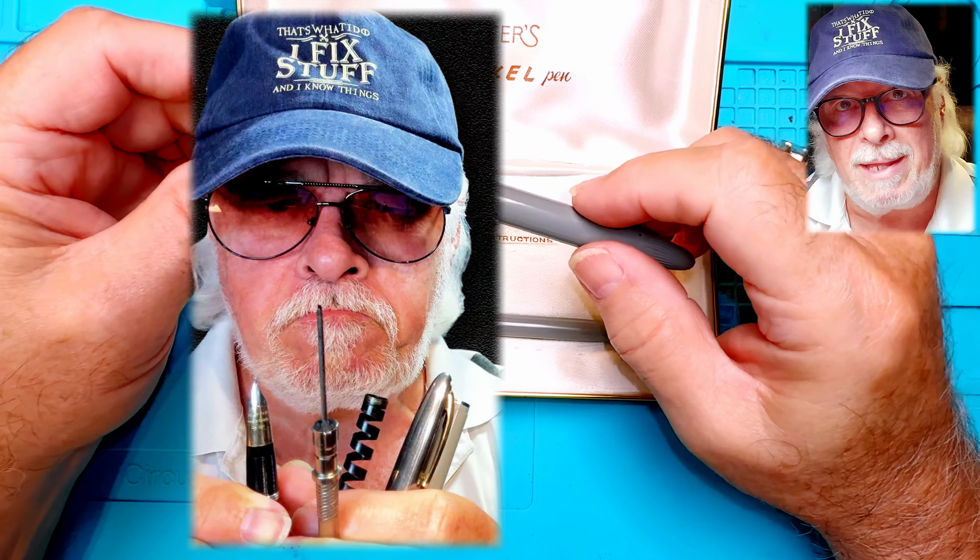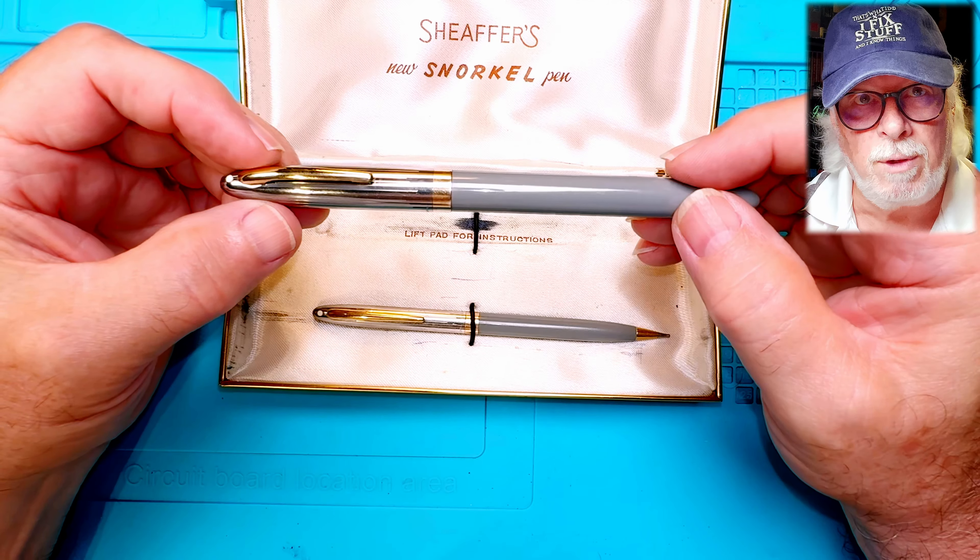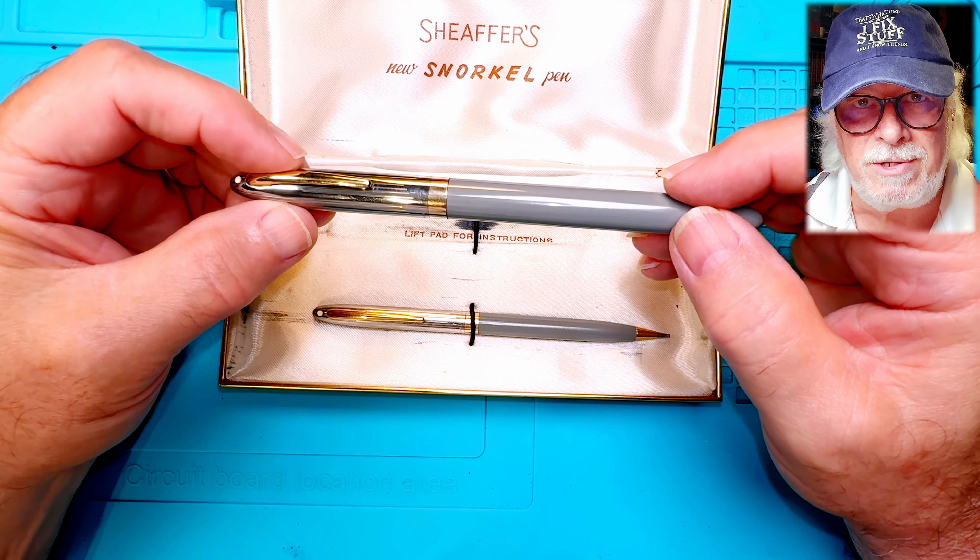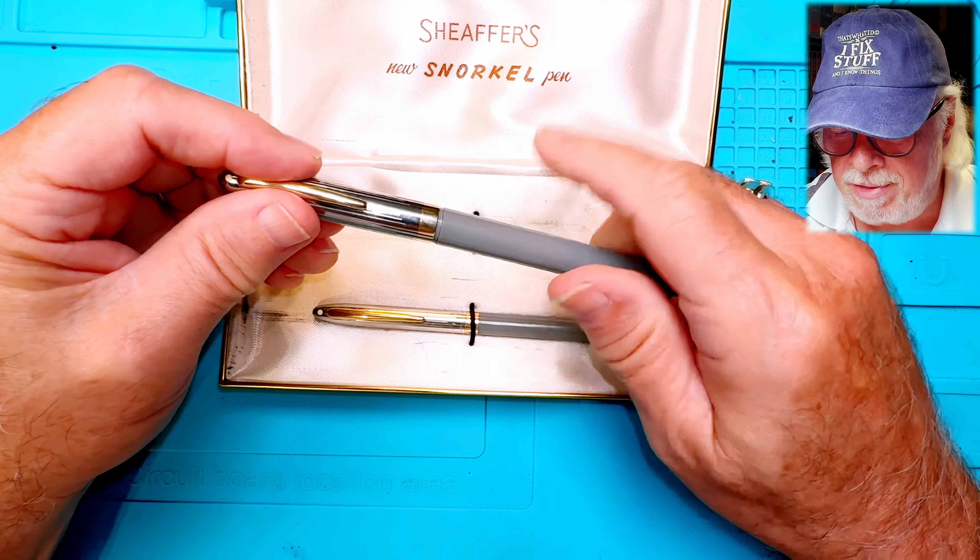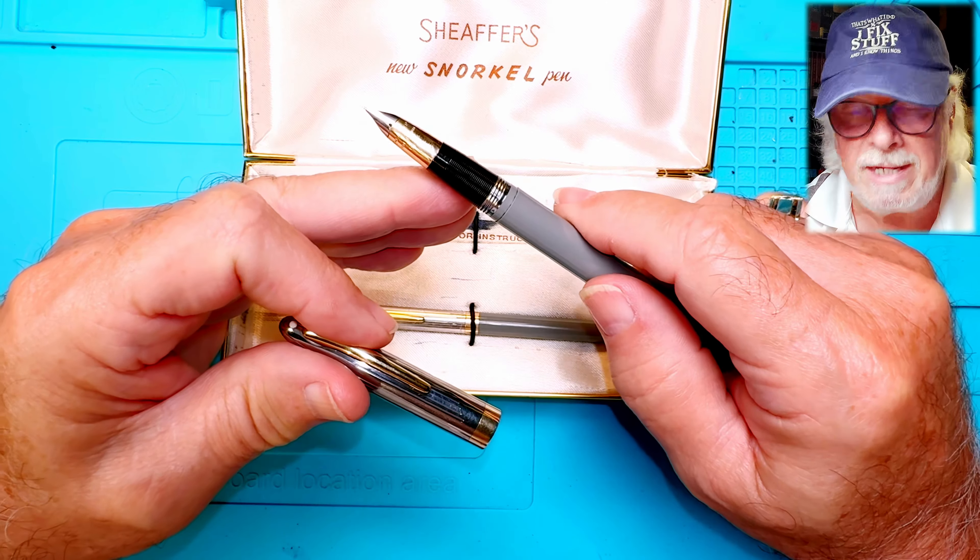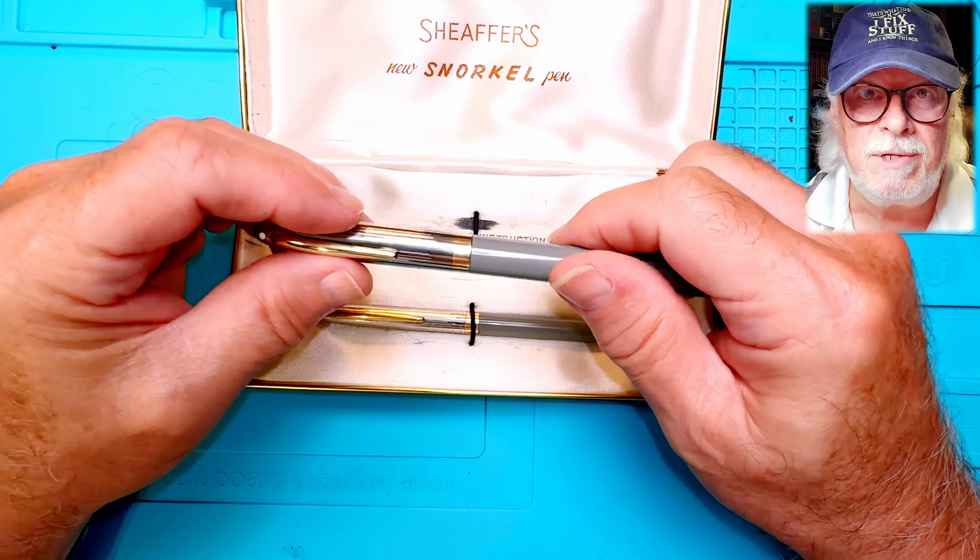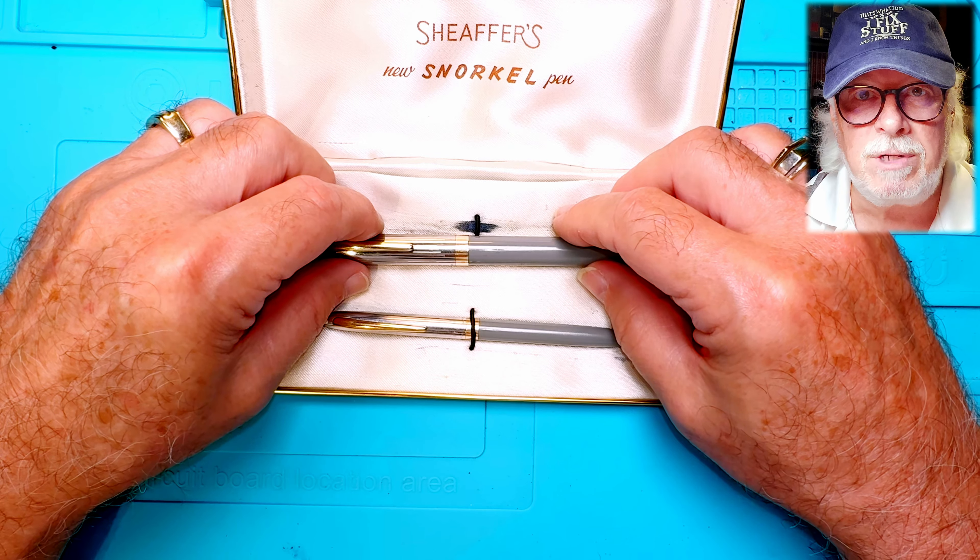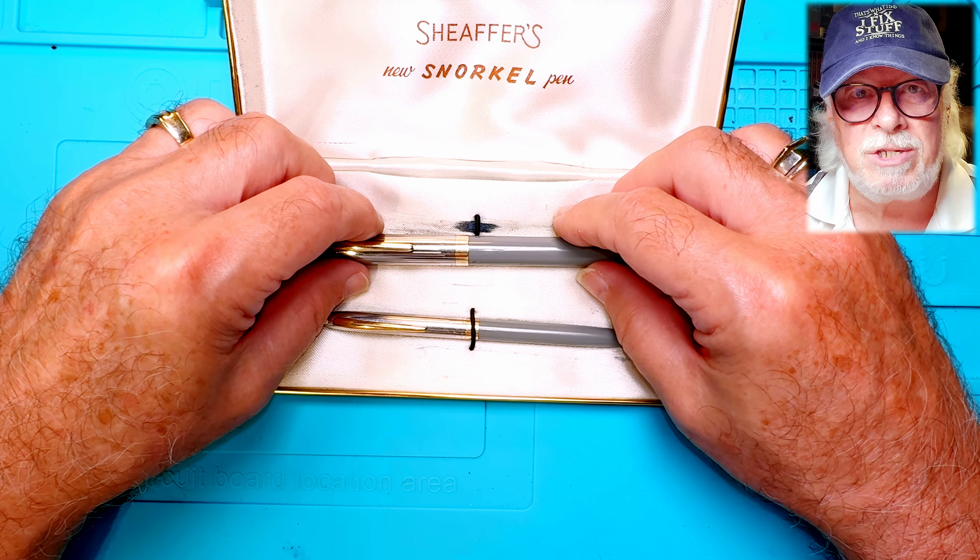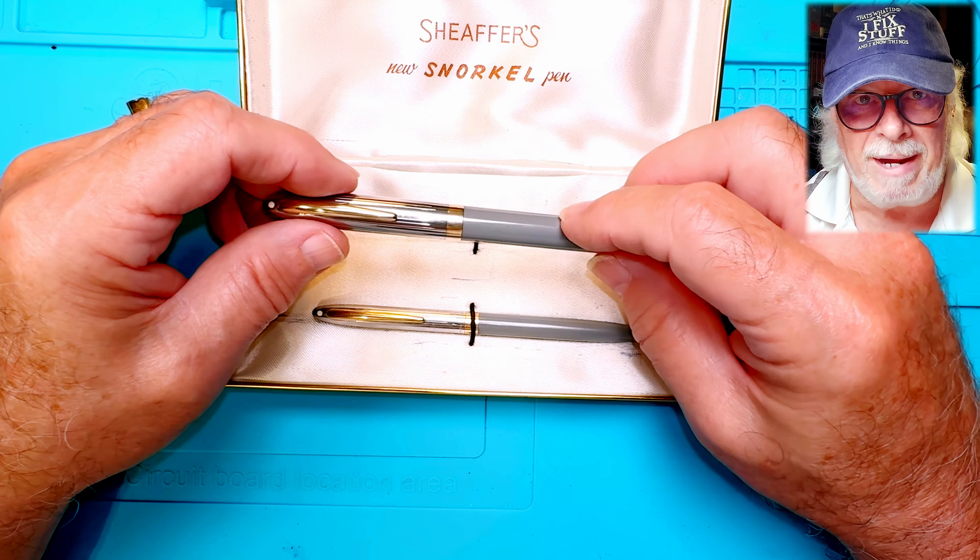You can probably tell by the lack of a smile on my face in the thumbnail that I wasn't successful with this one unfortunately. I'm pretty bummed about it because this was a beautiful pen and pencil set and the nib is delightful, but you can't save them all. I debated whether to publish this resurrection failure but I've decided that viewers might be interested in the process of restoring the most complex filling system ever designed for a fountain pen, the Snorkel.